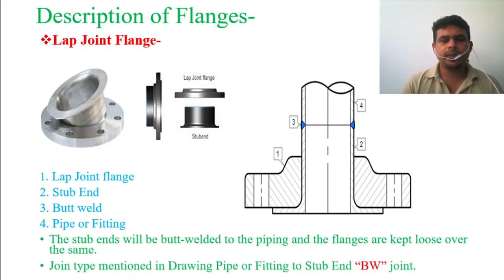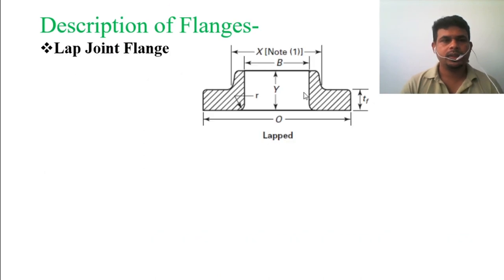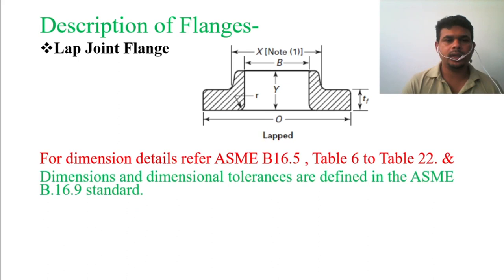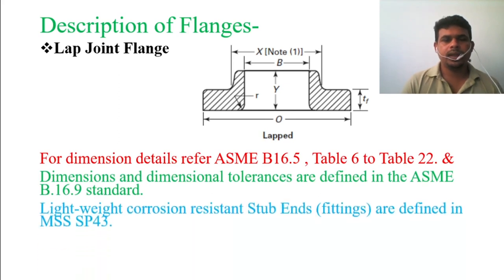The joint type mentioned in the drawing for pipe or fittings to stub-in is a butt joint. Looking at the flange dimensions, the chamfer and radius make the surfaces smooth. For more details, refer to ASME B16.5 Table 6-2, Table 3-2, and ASME B16.9 for dimensional tolerances. Lightweight corrosion-resistant stub-in fittings are defined in MSS SP-43.